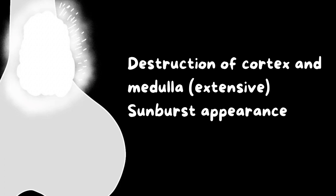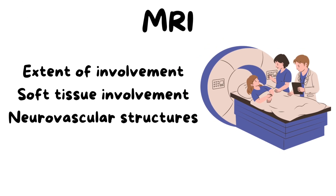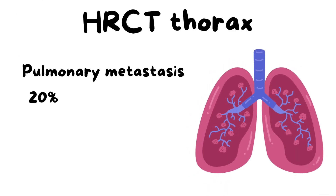There is usually extensive destruction of the cortex and medulla of the bone, and a sunburst appearance may be seen in some cases. MRI is required to identify the extent of the tumor, soft tissue involvement, and encasement of nearby neurovascular structures, all of which help in planning the surgical resection.